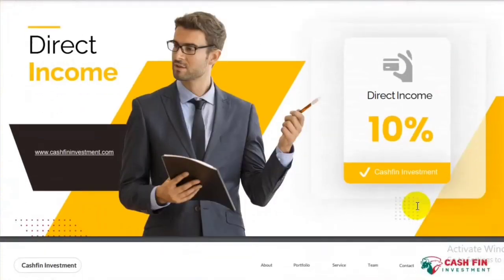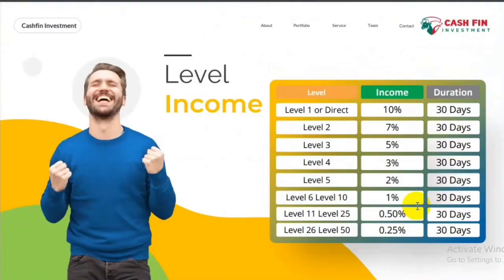We have seen direct income. How much is that? 10%. If you refer someone, you will get direct income. In the first level, you will get 10%; in the second level, 7%; in the third level, 5%; in the fourth level, 3%; in the fifth level, 2%; in the sixth level, 1%; in the seventh level, 0.5%; and in the eighth level, 0.25%.